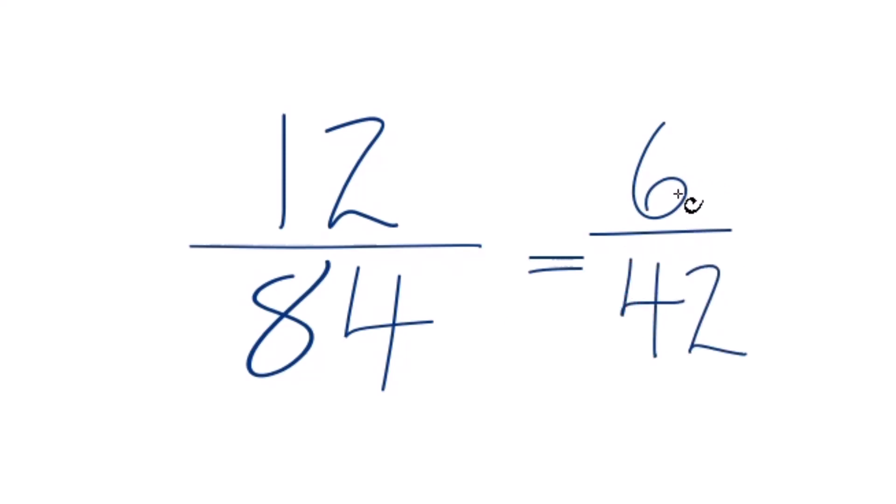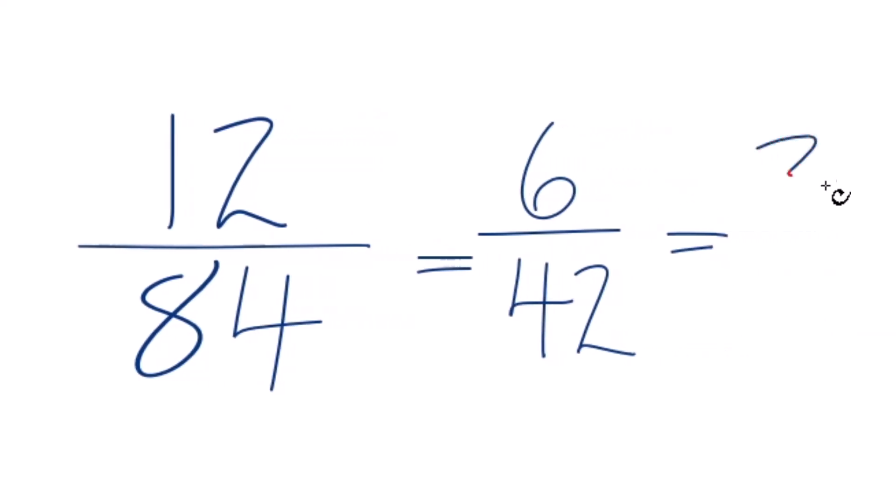And you might recognize that you could divide 6 into itself and 42, and you get that 1/7 again. But since these are even, let's just divide the numerator and denominator by 2. 6 divided by 2 is 3. 42 divided by 2 is 21.